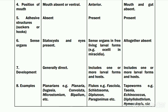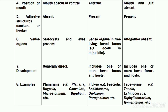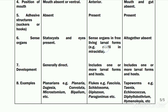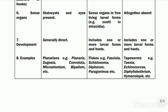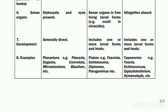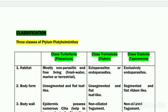Sense organs such as statocysts or eyes are mostly present in turbellarians but absent in Trematoda and Cestoda, although in the free living larval forms of class Trematoda, eyes or ocelli can be present. Development is generally direct in turbellarians but indirect, involving larval forms, in Trematoda and Cestoda. Examples of class Turbellaria include Planaria and Dugesia. Examples of Trematoda include Fasciola and Schistosoma. Examples of Cestoda include Taenia and Echinococcus. This concludes the classification of the phylum Platyhelminthes.